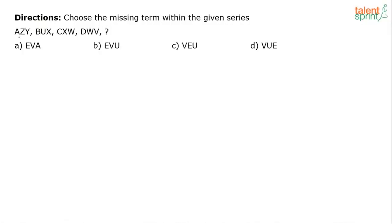Choose the missing term within the given series. So the series here is A, Z, Y, B, U, X, C, X, W, D, W, V and question mark. You have to find out what comes in place of the question mark.